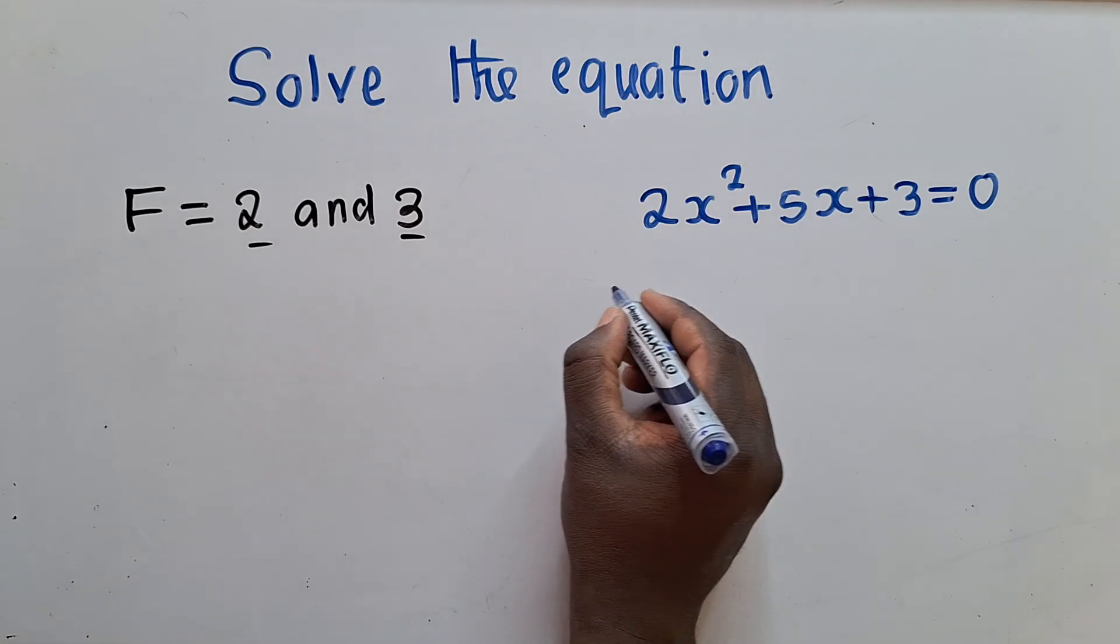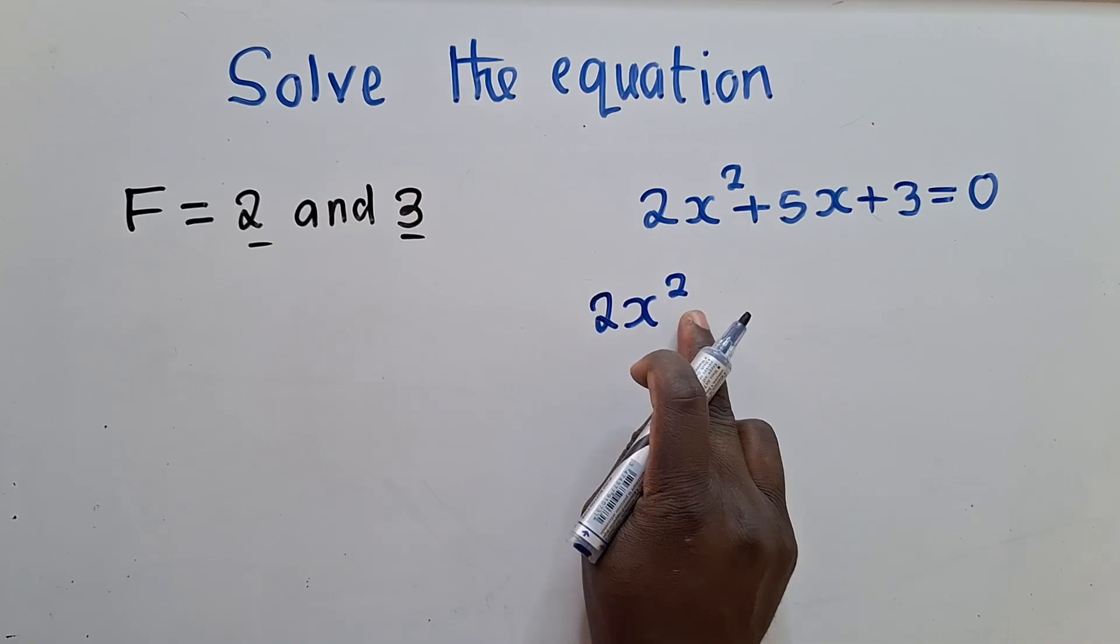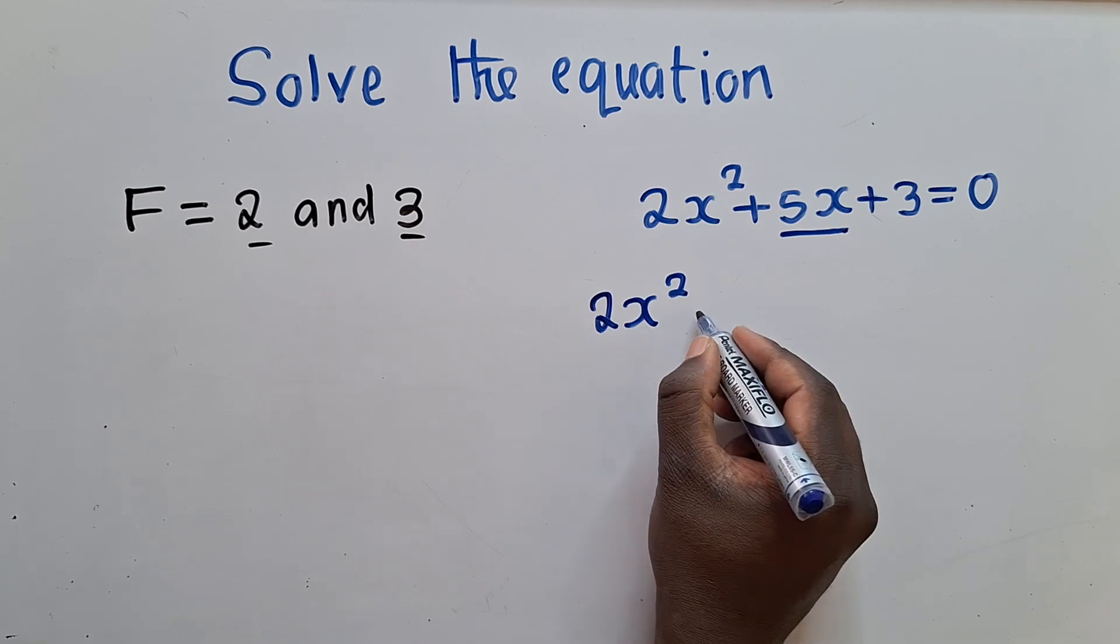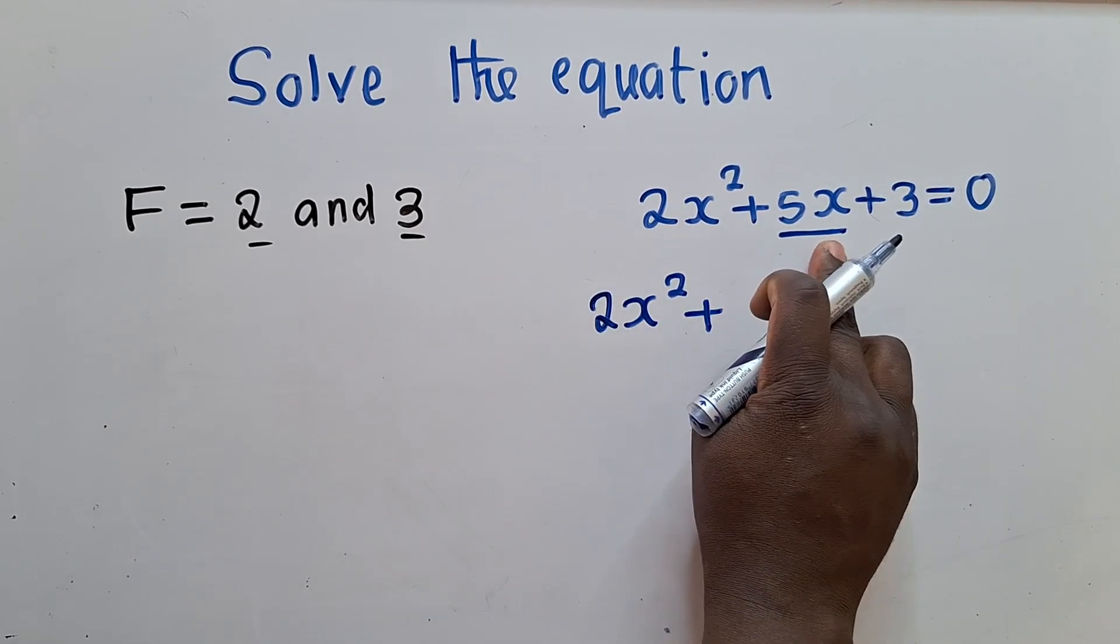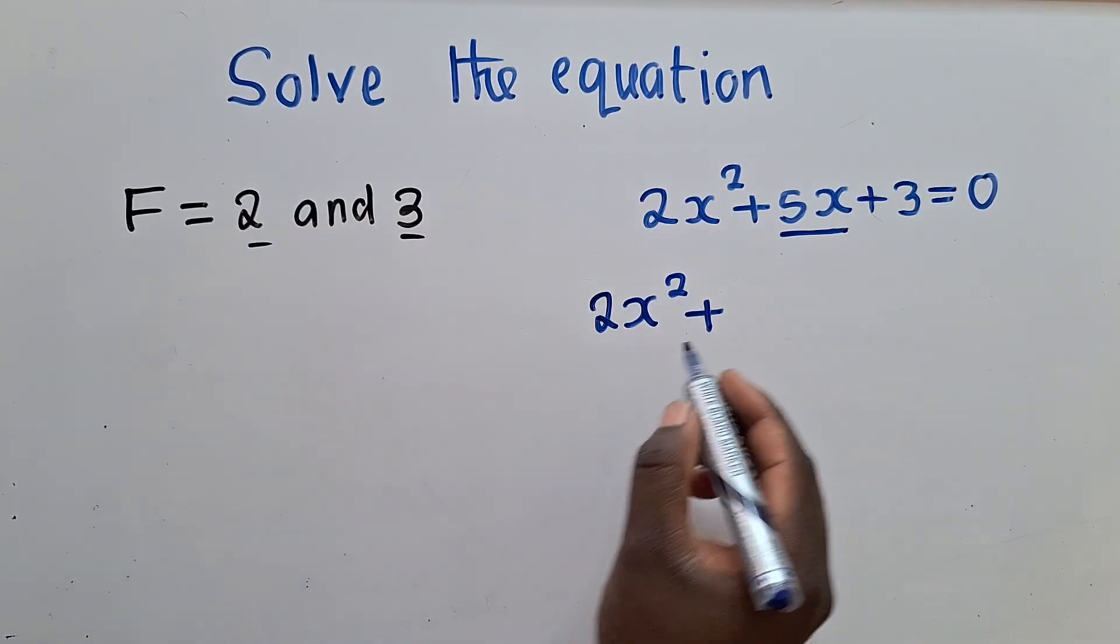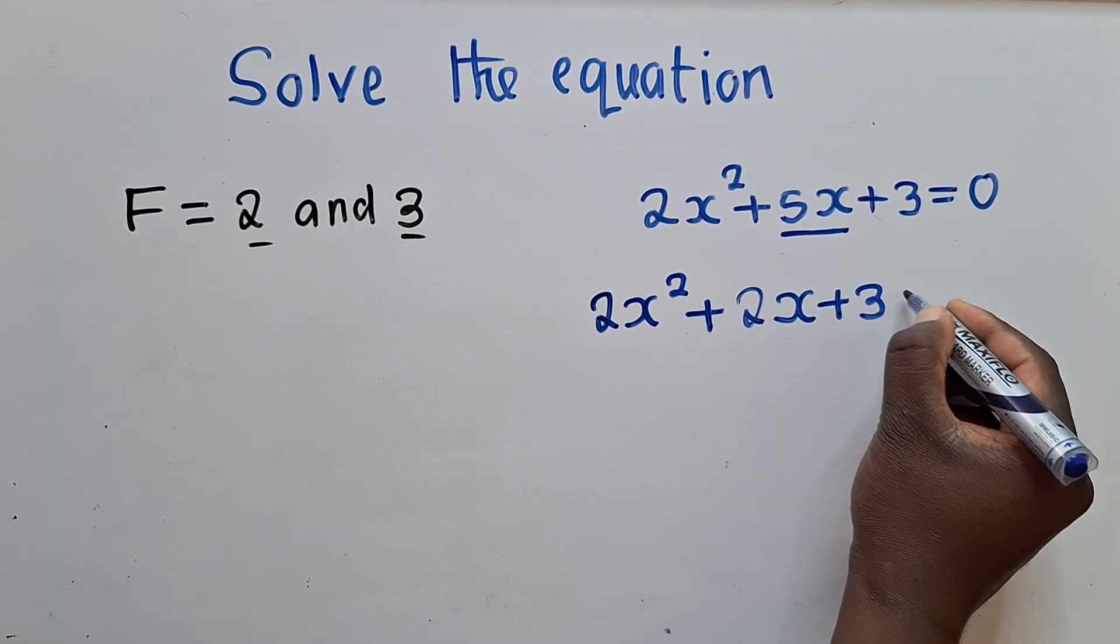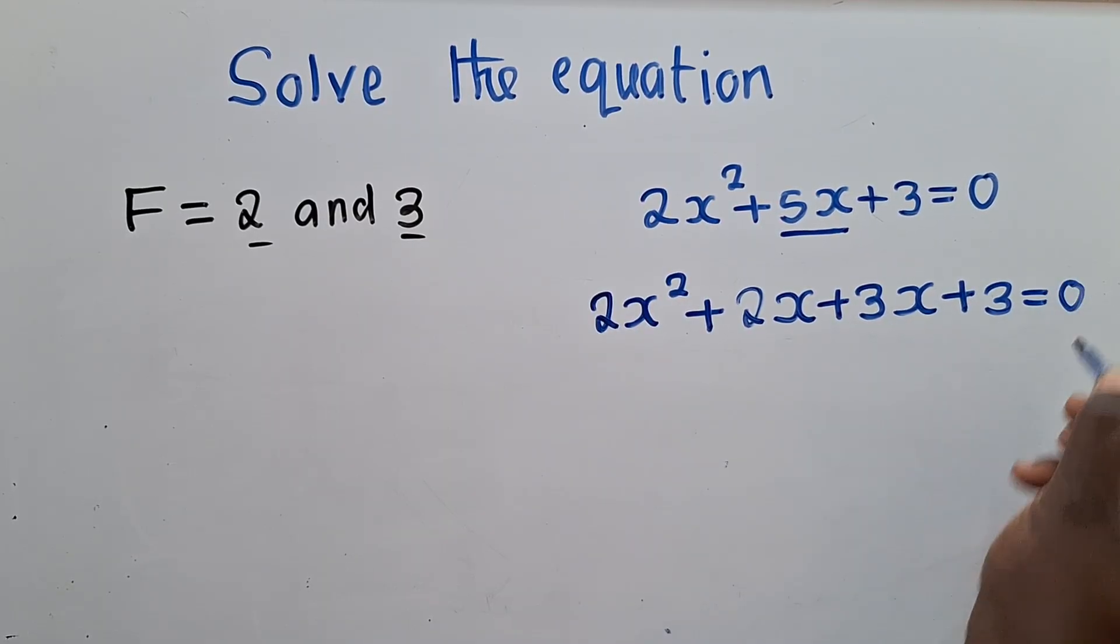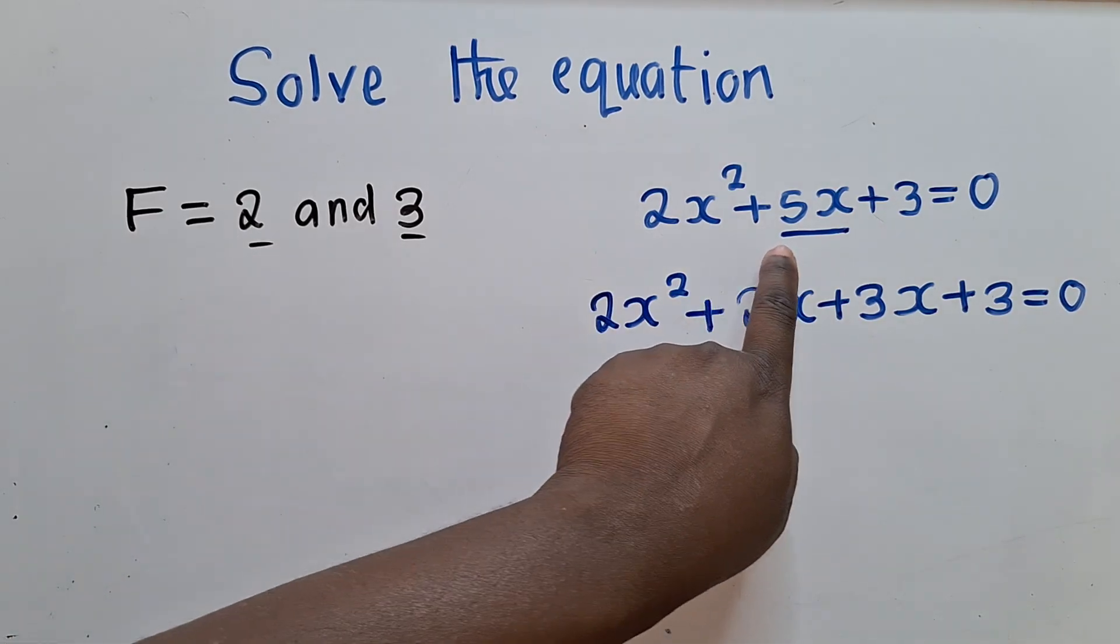Now you come to your question, write the first term. So the term with x power 2, write it. But the term which is here, your B, don't write it. In place of B, which is a 5x, substitute these two factors. So that is 2x² plus 2x plus 3x plus 3 equals 0. So now we've substituted these factors where 5x is.